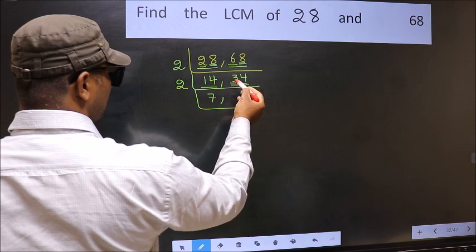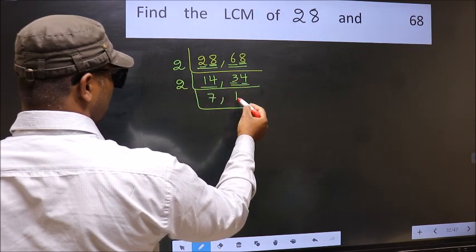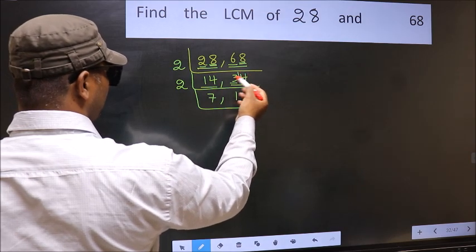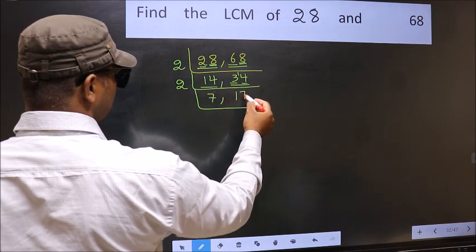First number 3, a number close to 3 in 2 table is 2 times 1 is 2. 3 minus 2 is 1. 1 carry it forward 14. When do we get 14 in 2 table? 2 times 7 is 14.